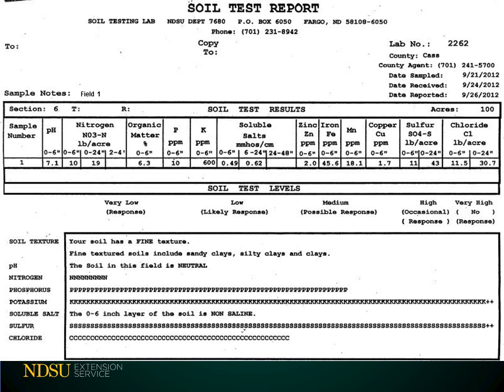pH is reported on a scale of 1 to 14. Seven is neutral, below 7 is acidic, while above 7 is basic. pH is important for nutrient availability; ideal soil pH is around 6 to 7.5. Phosphorus can be tested various ways. To my knowledge, the soil test labs in North Dakota use a phosphorus test called the Olsen. If a lab outside of North Dakota is testing your soil, you should ask them what phosphorus test they are using, as different phosphorus tests can greatly affect the amount of phosphorus applied.